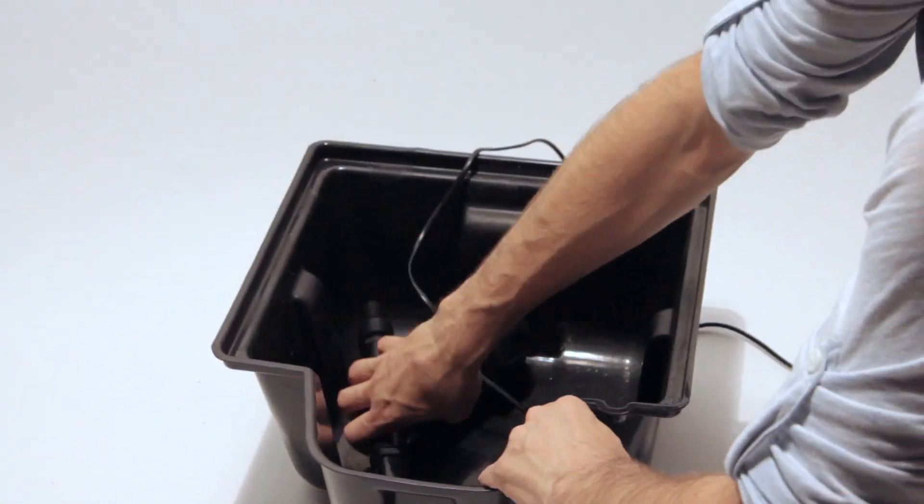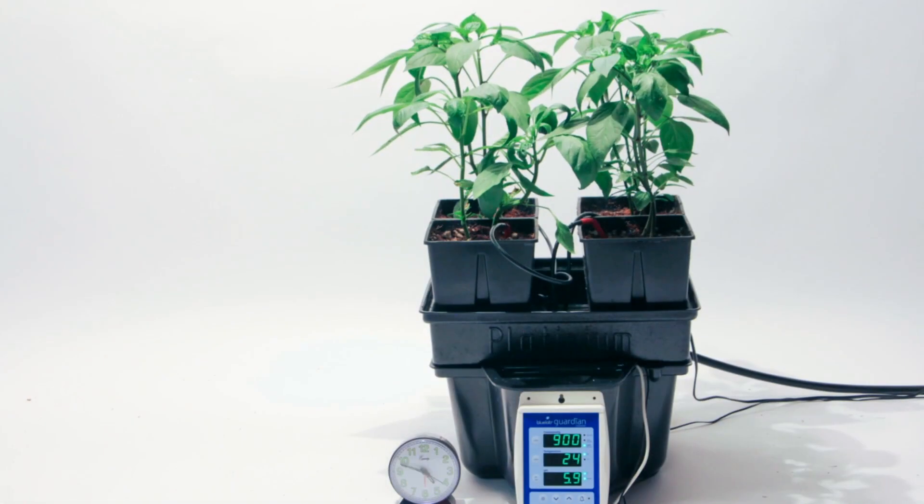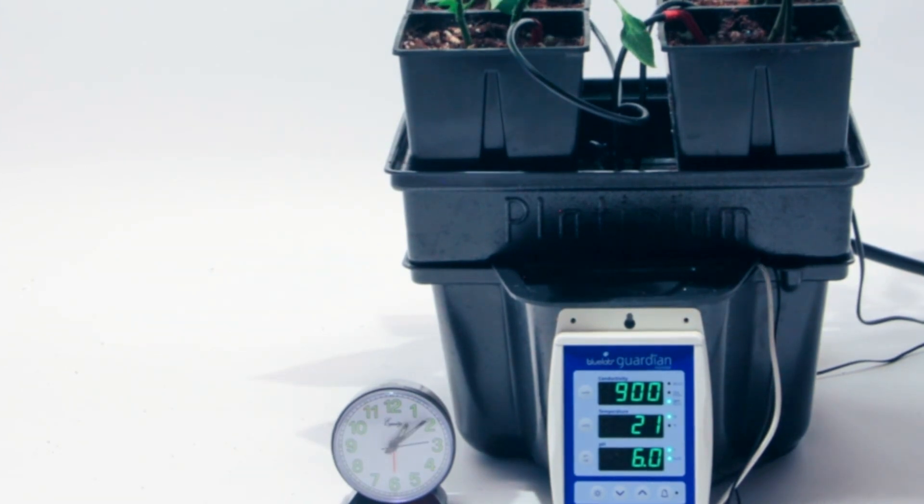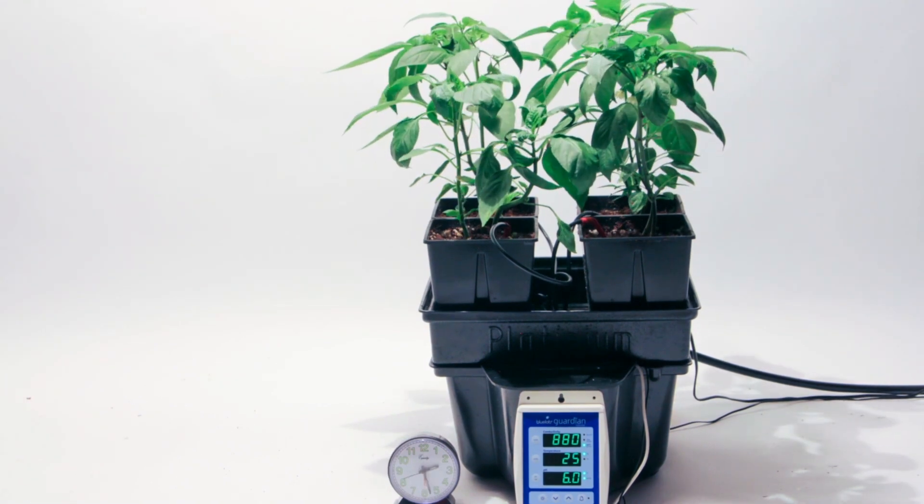Here we set up a test grow with a recirculating drip system and the Perfect pH inline addition. As you can see in the time-lapse, the pH stayed in a tight and controlled range, fluctuating just slightly to best absorb nutrients as the plants develop.